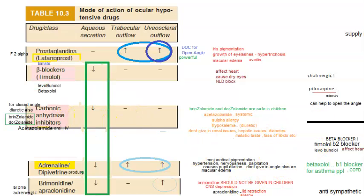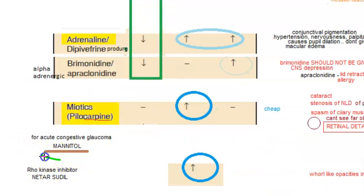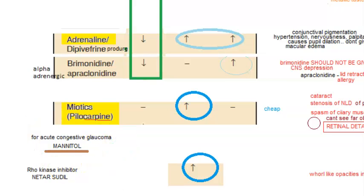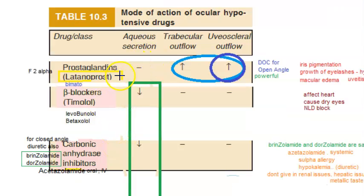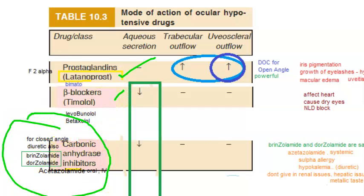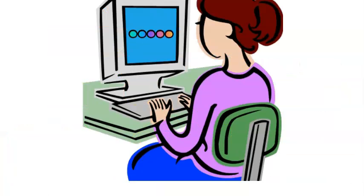You should also know mannitol for acute congestive glaucoma. If the angle is open, you can choose prostaglandins or beta blockers. But if the angle is closed, carbonic anhydrase inhibitors and mannitol will work. Mannitol is for acute congestive glaucoma.